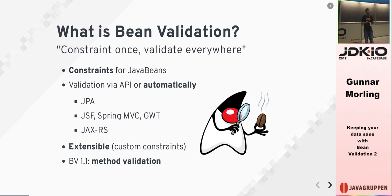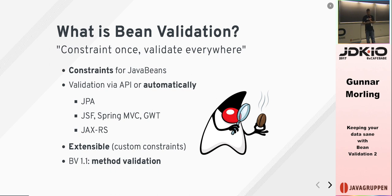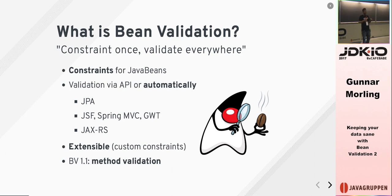You put those constraints using annotations on your model. You can also validate those constraints via an API, but most of the time the validation will be called automatically for you because bean validation is integrated with other specs like JPA, JSF, JAX-RS, and many others. Those technologies call bean validation at the right point in the object lifecycle — for instance, JPA applies constraints when you write your model to the database, making sure only valid data is ever persisted. It's also integrated with Spring and other Java projects.